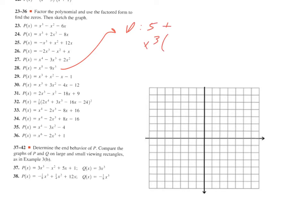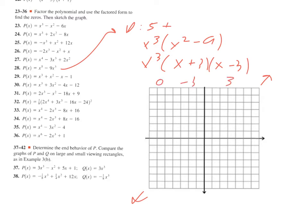GCF-ing out x to the third leaves me with x squared minus nine, and we'll break that down as a difference of perfect squares. That gives zeros at zero, negative three, and three. They're all cuts because they're all odd exponents, even the third power. So we're going to switch sides every single time — switch to the top, switch to the bottom, switch to the top.